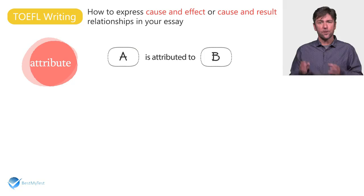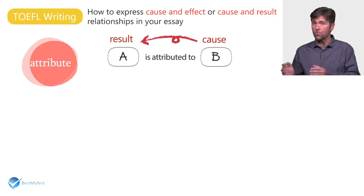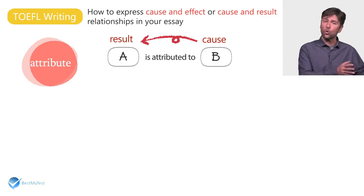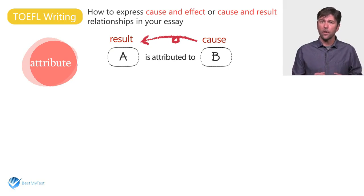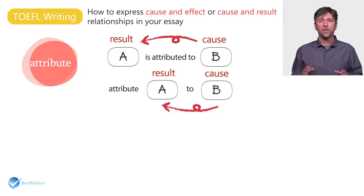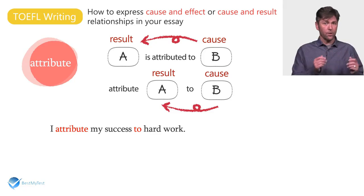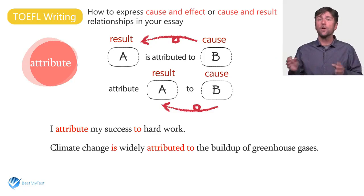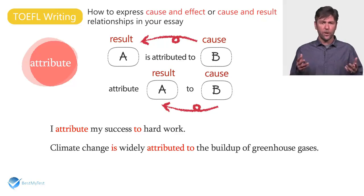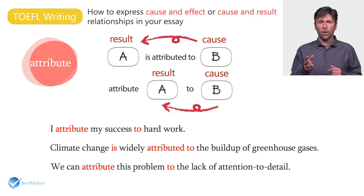A is attributed to B means A is the result of B, and B is the cause of A. Here are examples of how to use attribute: I attribute my success to hard work. Climate change is widely attributed to the build-up of greenhouse gases. We can attribute this problem to the lack of attention to detail.